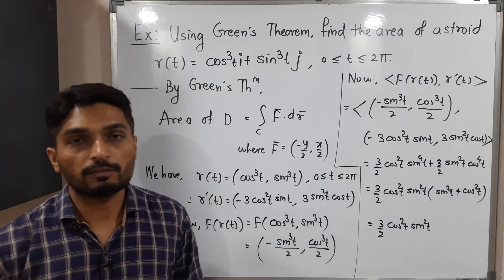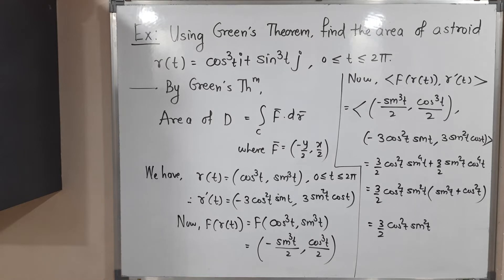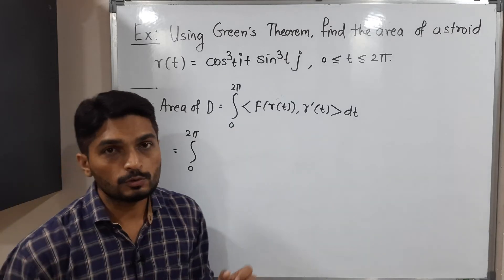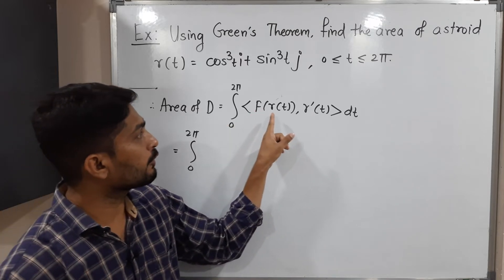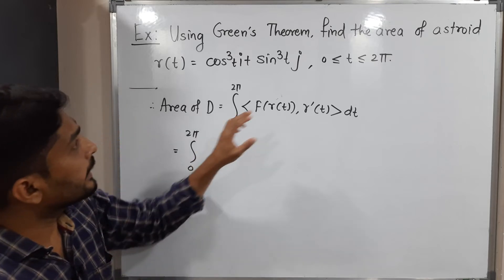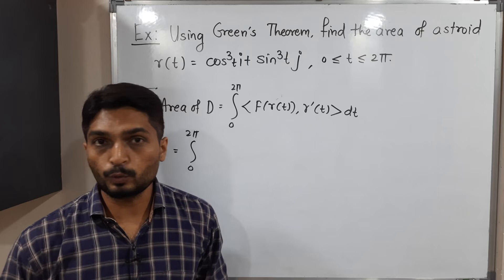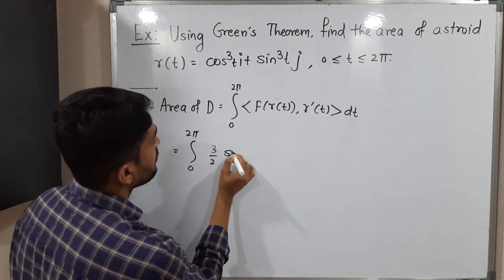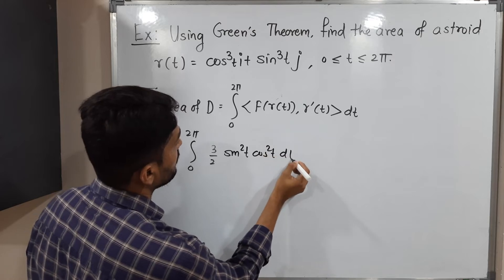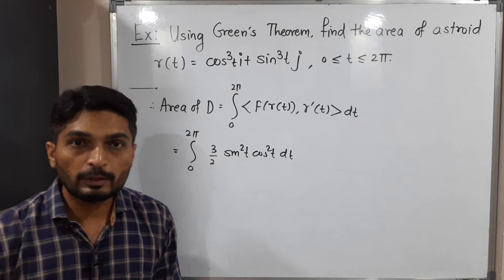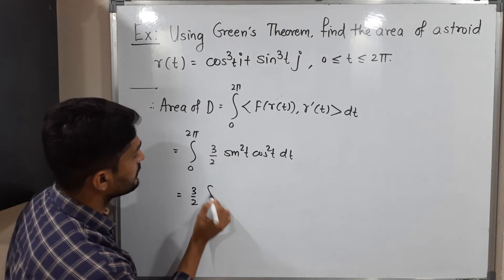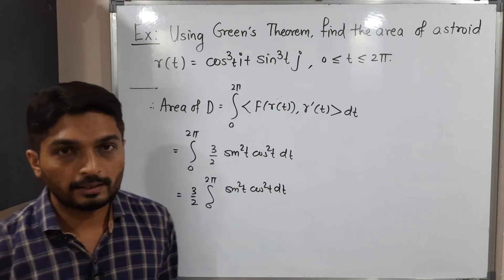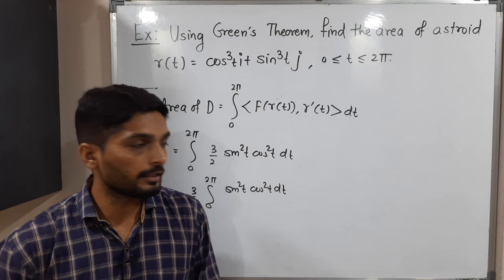Now using the definition of the line integral, the area of D equals the integral from 0 to 2π of the inner product f(r(t))·r'(t) dt. We already calculated that inner product, so we substitute: area = integral from 0 to 2π of (3/2)sin²t·cos²t dt. The constant 3/2 comes outside, giving (3/2)∫₀²π sin²t·cos²t dt.